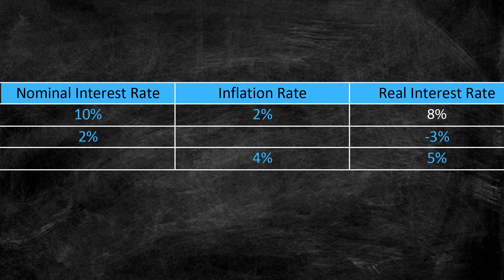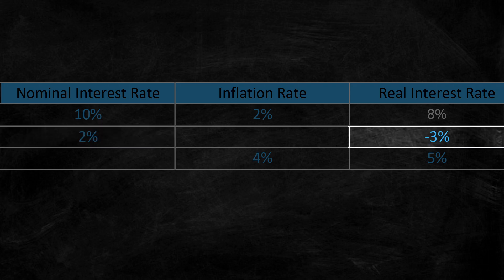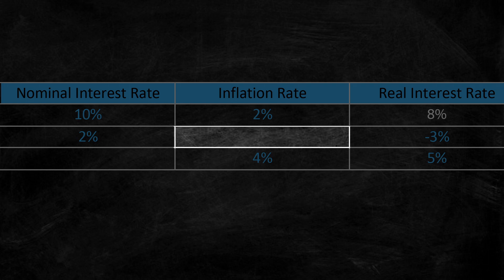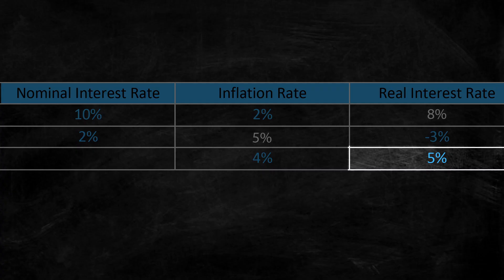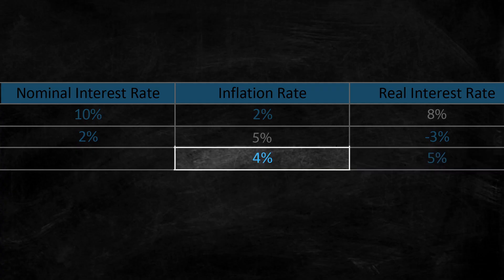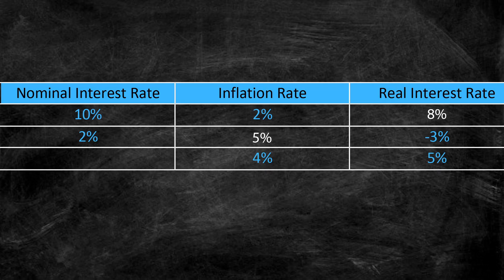Let's try another one. If the nominal interest rate is 2% and the real interest rate is negative 3%, what is the inflation rate? Well, by rearranging our formula, it's simply 2% minus negative 3%, which is 5%. And lastly, if the real interest rate is 5% and the inflation rate is 4%, what is our nominal interest rate? After rearranging our formula once again, it's simply 5% plus 4%, which is 9%.